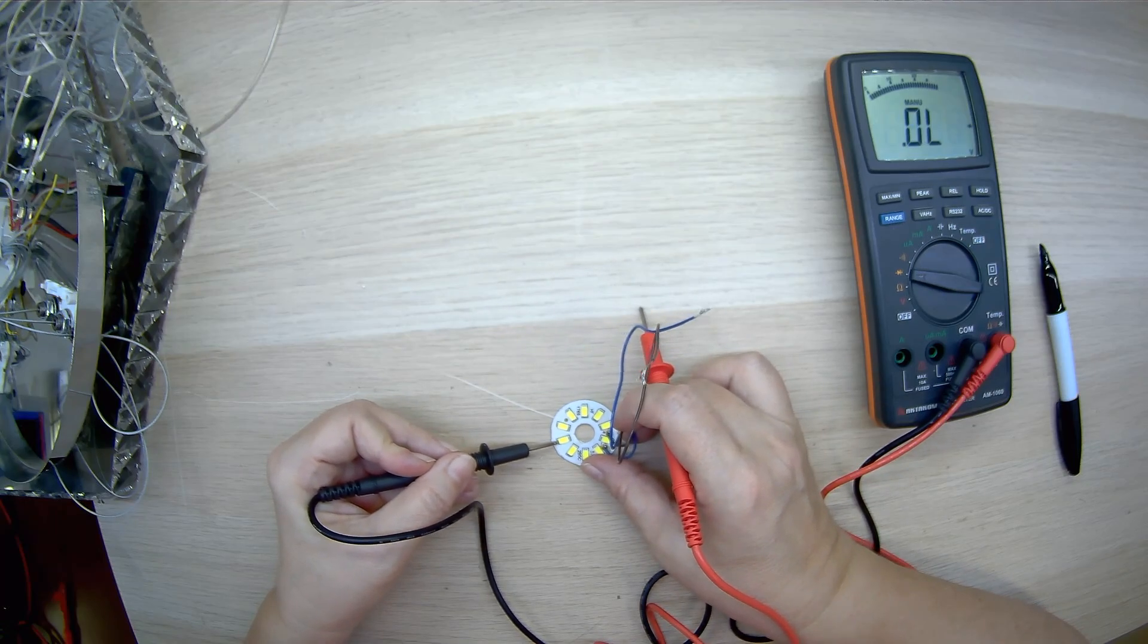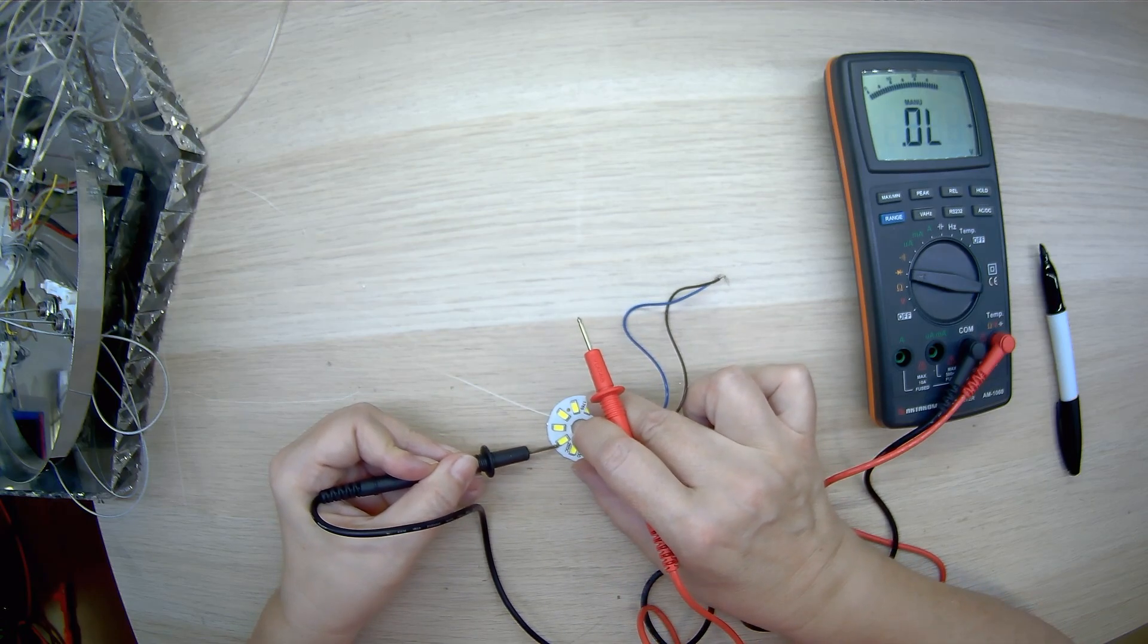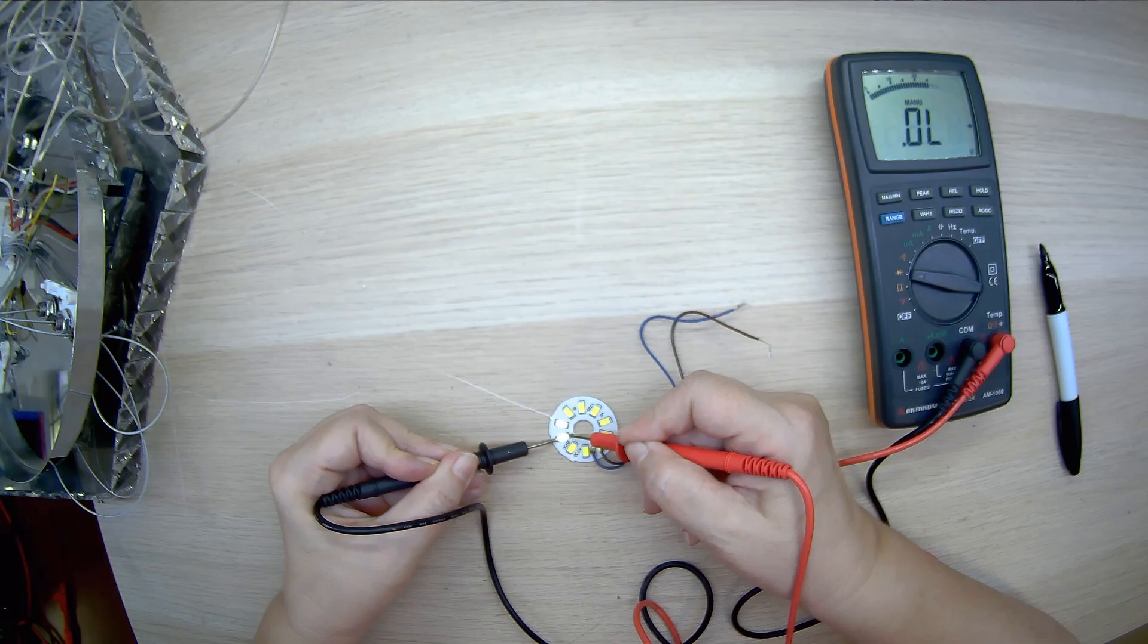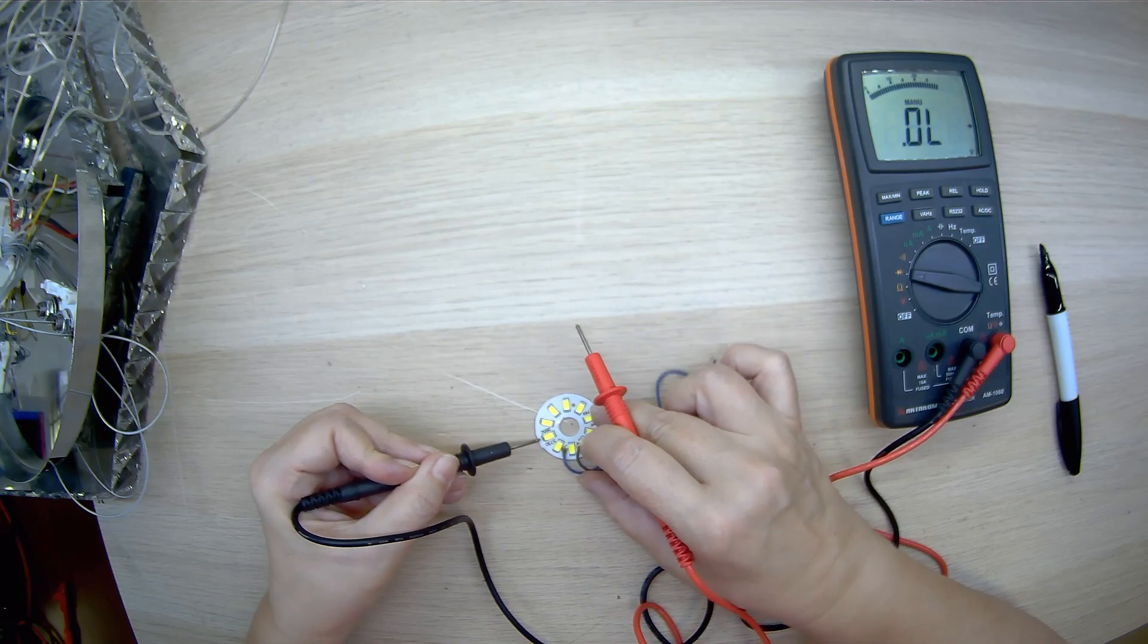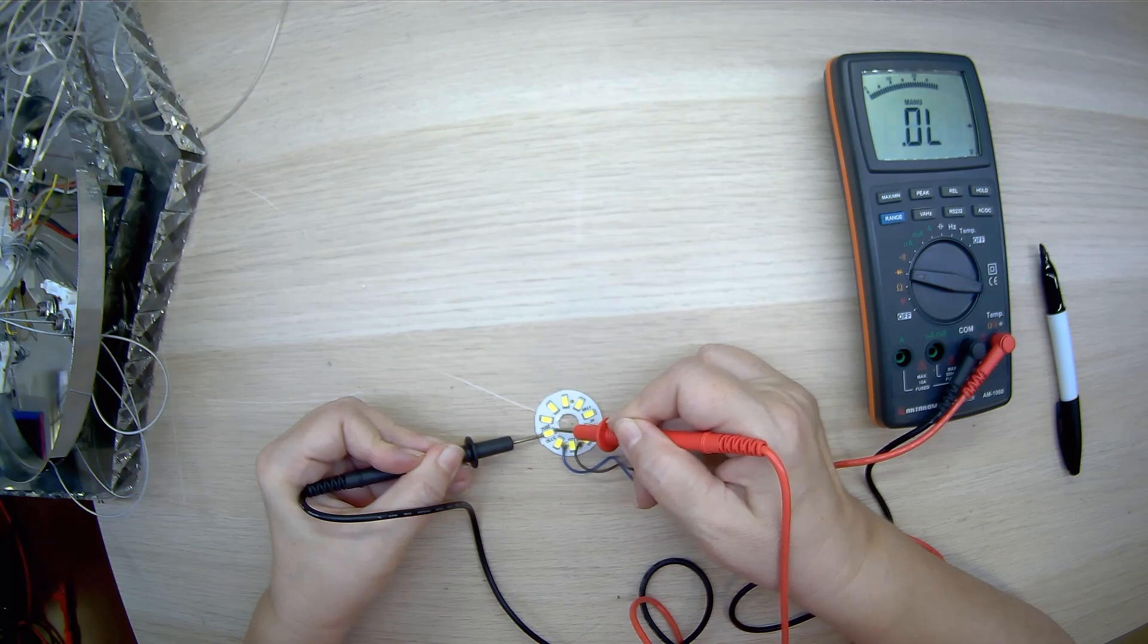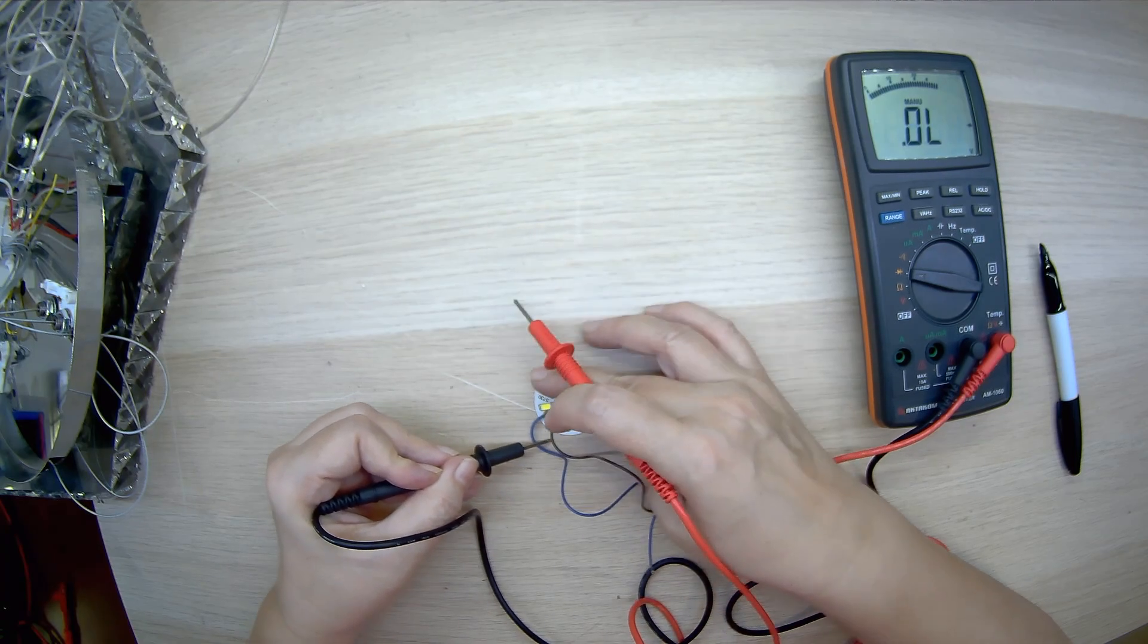To do this, we use our advanced multimeter Octopus AM1060 in diode testing mode. We see that the LEDs light up in pairs and this means they are working properly.